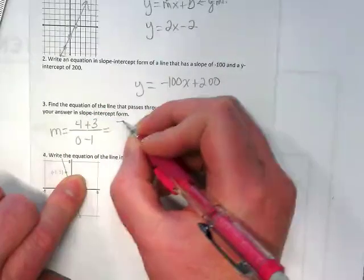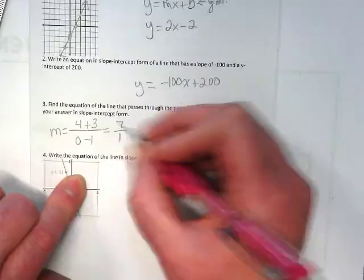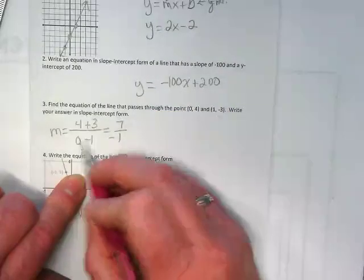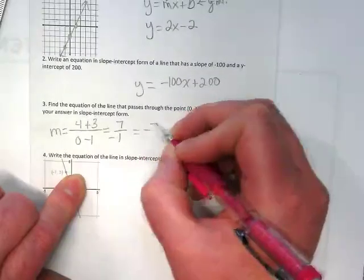And I end up with 7 over 1, but it's 0 minus 1, so it's negative, so my slope is negative 7.